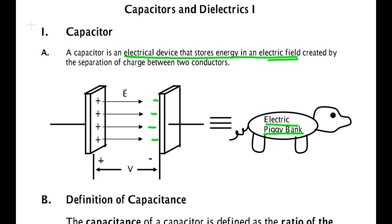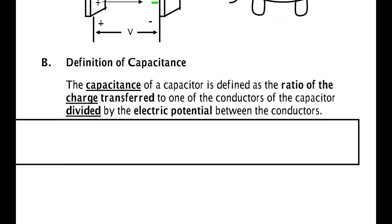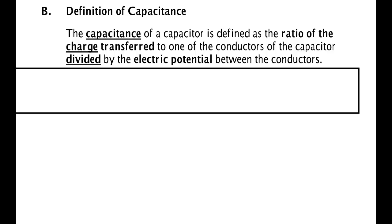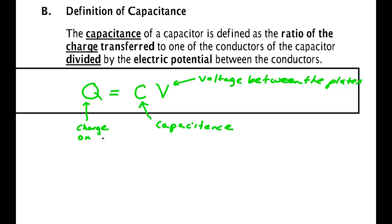For a capacitor as we put charge into its plates we find that it has a very specific voltage and the relationship is that the charge is equal to the voltage times some constant called the capacitance. So this is the capacitance, this is the voltage between the plates, and this is the charge on one plate. We know if one plate is positive the other plate will be negative.